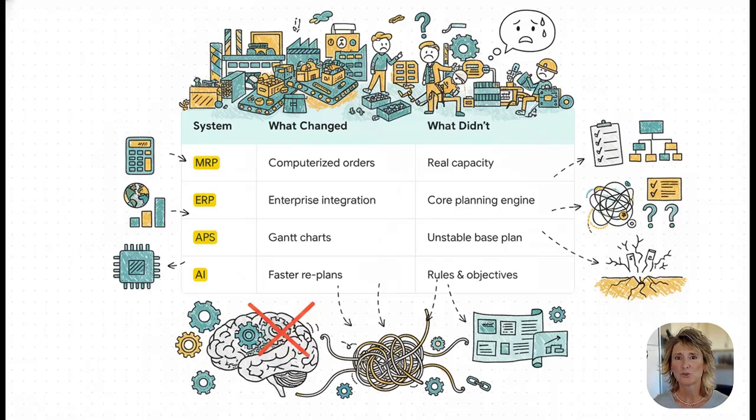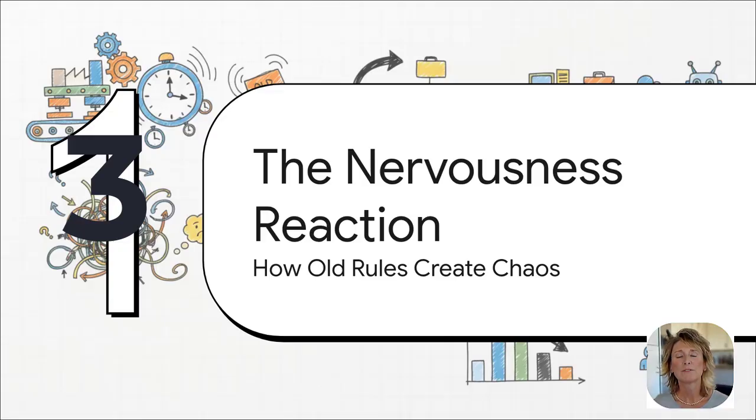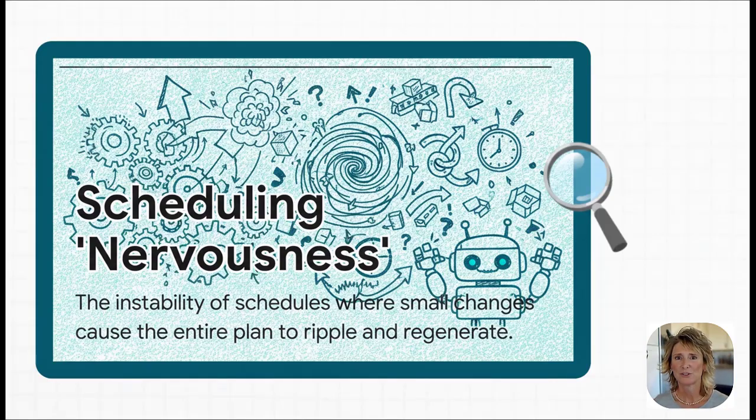So what happens when you try to run a modern factory on that ancient flawed foundation? Well, you get this, this chaotic phenomenon. It's been around for so long, it actually has a name. It's called scheduling nervousness. And no, that's not some new buzzword. People were talking about this back in the 80s. It's that feeling when one tiny thing goes wrong, a machine goes down, a part is late, and the entire schedule just blows up. The plan ripples, everything regenerates, and suddenly everyone's just firefighting. I mean, does that sound at all familiar to you?